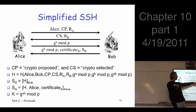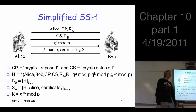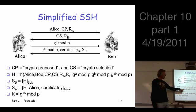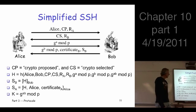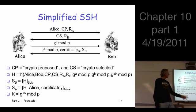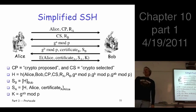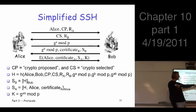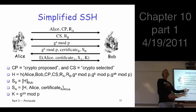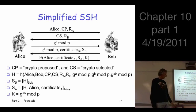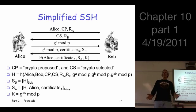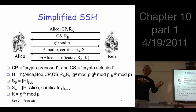Bob sends back his Diffie-Hellman value along with his certificate, and the crucial thing is S_B. He takes all the previous messages — Alice, Bob, crypto parameters, nonces — hashes all that stuff together, and then signs it. Then Alice comes back with her name, her certificate, and a comparable signed quantity S_A, but signed by Alice. And it's all encrypted with the key K, which is G^AB mod P — the Diffie-Hellman shared secret.